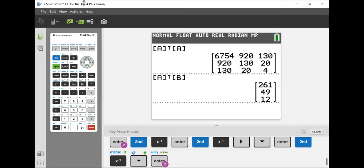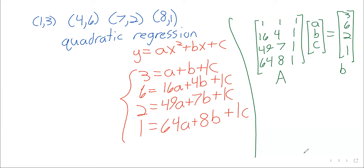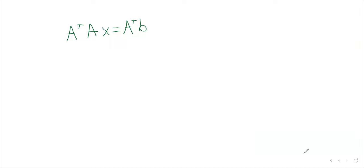So, to find the least square solutions, to come as close to solving this quadratic as it's possible to come, we've got A transpose A.